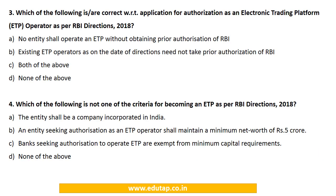MCQ 3: Which of the following is correct with regard to the application for authorization as an ETP operator as per the RBI Directions 2018? (a) No entity shall operate an ETP without obtaining prior authorization of RBI — this is correct as we have already seen. (b) Existing ETP operators as on the date of directions need not take prior authorization of RBI — this is incorrect. The answer is option A.